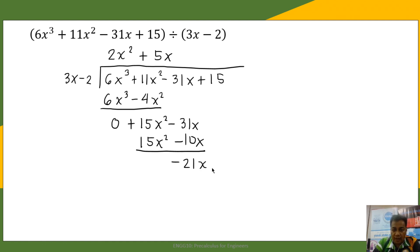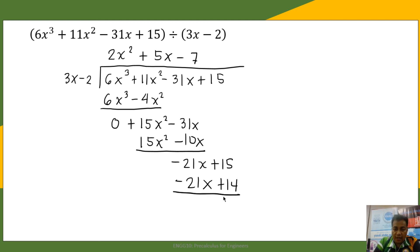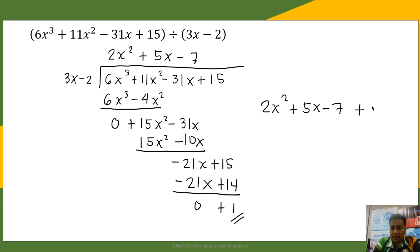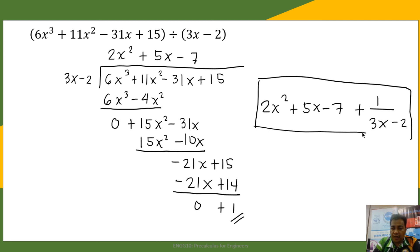We subtract: negative 31x minus negative 10x is negative 21x. Bring down positive 15. Negative 21x divided by 3x is negative 7. So negative 7 times 3x is negative 21x, and negative 7 times negative 2 is positive 14. Subtracting: 0 remainder, and 15 minus 14 is positive 1. This is our remainder. The final answer is 2x squared plus 5x minus 7 plus 1 over (3x minus 2).